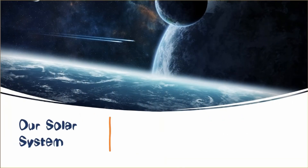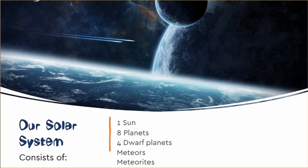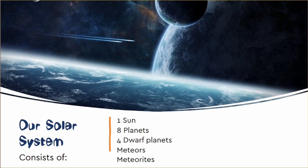Let's look at our solar system. Our solar system consists of one sun, eight planets, four dwarf planets, meteors and meteorites.